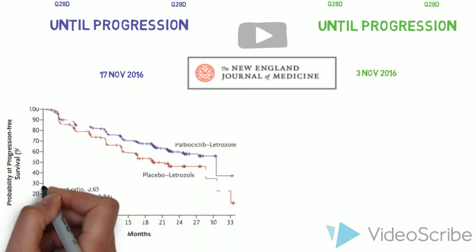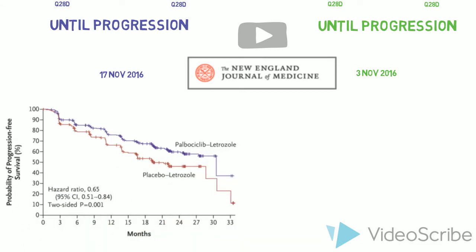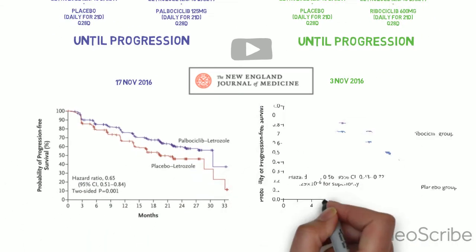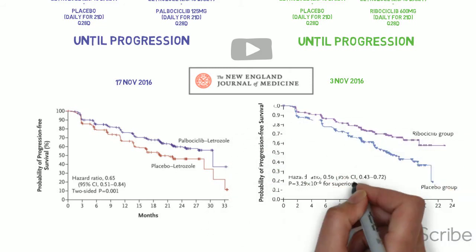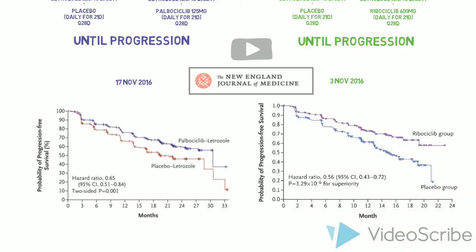Paloma 2 demonstrated a 35% reduction in risk of disease progression for palbocyclib and Mona Lisa 2 demonstrated a 44% reduction in risk of progression. Both trials met their predefined statistical endpoints and increased the median time to progression from around 14 months to at least 22 months.